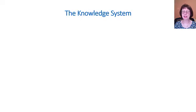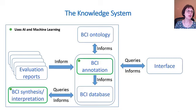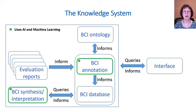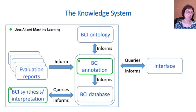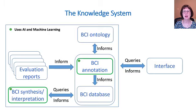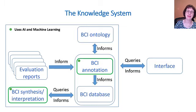Here is a schematic of the knowledge system. On the left, you see evaluation reports — the published study reports. These inform the behaviour change intervention annotations that in turn inform and are informed by the development of the behaviour change intervention ontology. Going down the screen from the annotations, they inform the database. On the bottom left-hand corner, you'll see the synthesis and interpretation. The green boxes are those that use artificial intelligence and machine learning — a two-way interaction between synthesis and interpretation and the database itself. On the right-hand side, you have the interface: users query the knowledge system, but in turn they can also feed into it.